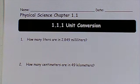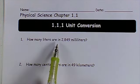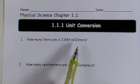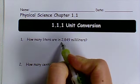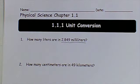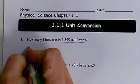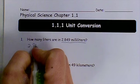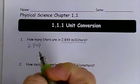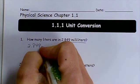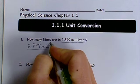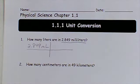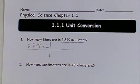Have this worksheet out that says 1.1.1 Unit Conversion. And we're going to do these problems with you to show you how to do this before you get your other sheet. So unit conversion. My question says, how many liters are in 2.849 milliliters? So the first thing I do is I start with the number they give me and I write it down: 2.849 milliliters. And I draw these lines like this. This is our bridge.